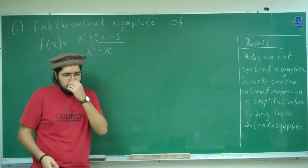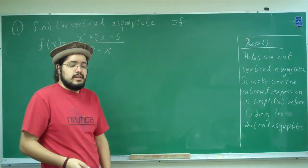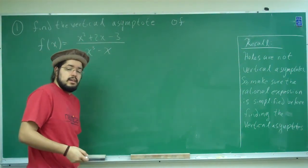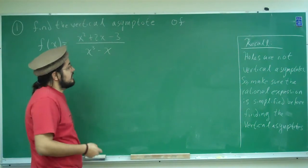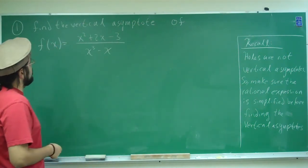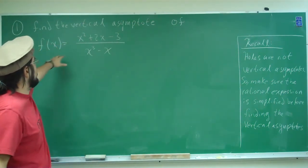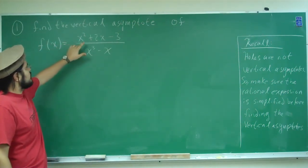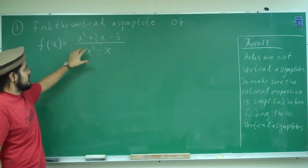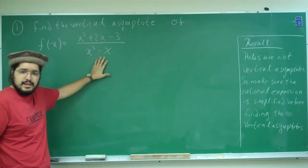This is problem one of MAC 2233, exam B. Problem one reads: find the vertical asymptote of f of x equals x squared plus 2x minus 3, divided by x cubed minus x.